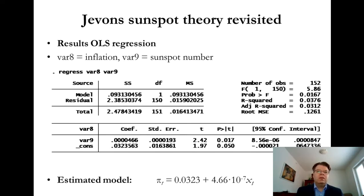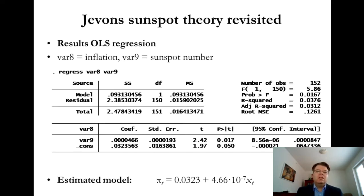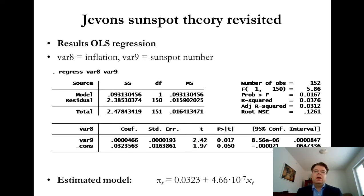Still, the regression as a whole is statistically significant. This is an interesting result given that the time period started in 1861. For most of this sample period, Finland was a highly agricultural society. So perhaps solar activity has indeed been important for the economy over a large proportion of this time period.